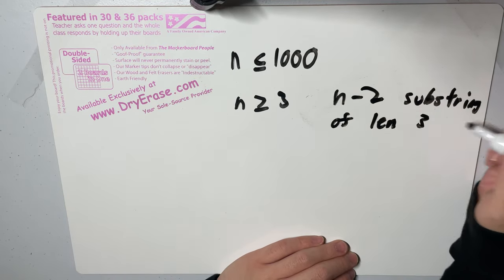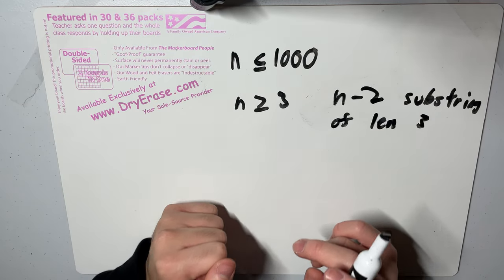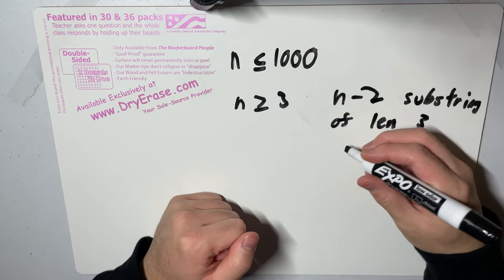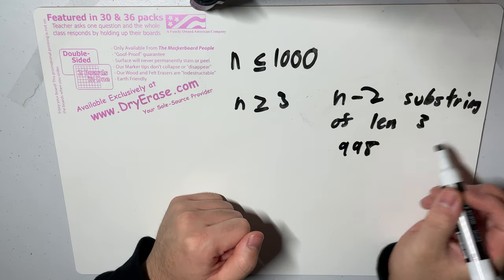And then obviously if n is less than three, then there are zero substrings. So n minus two is at most 998, right? So there's at most 998 substrings of length three in our input.